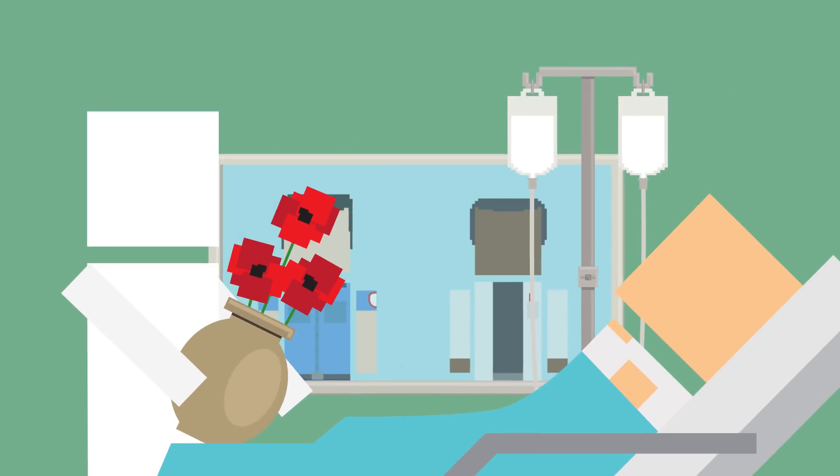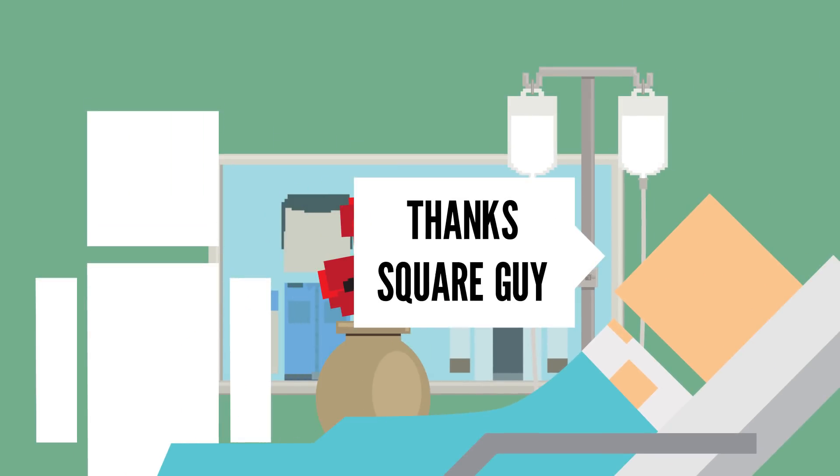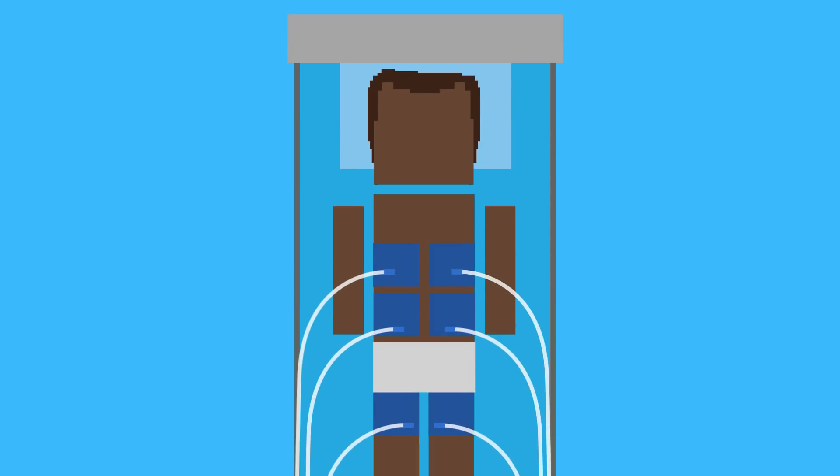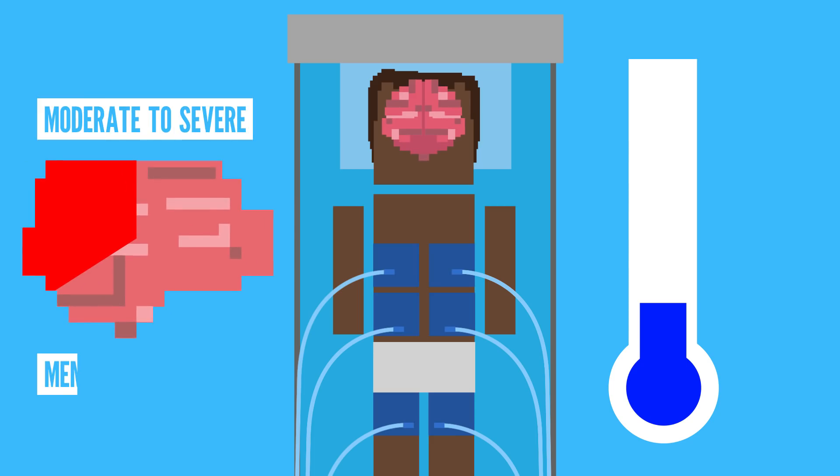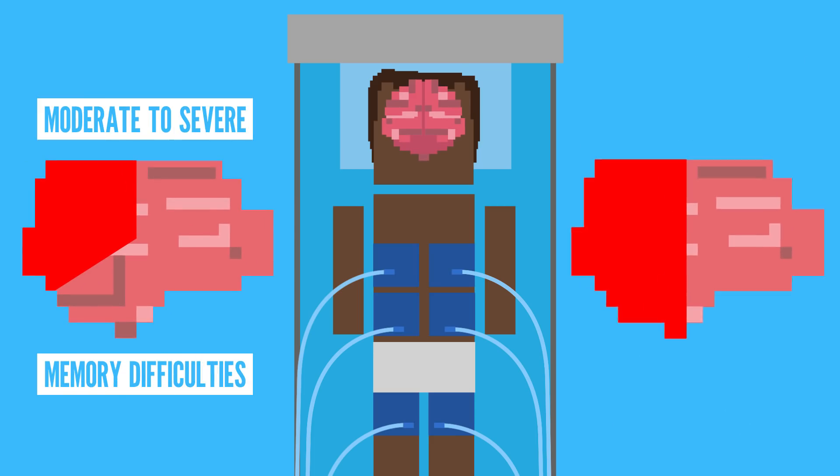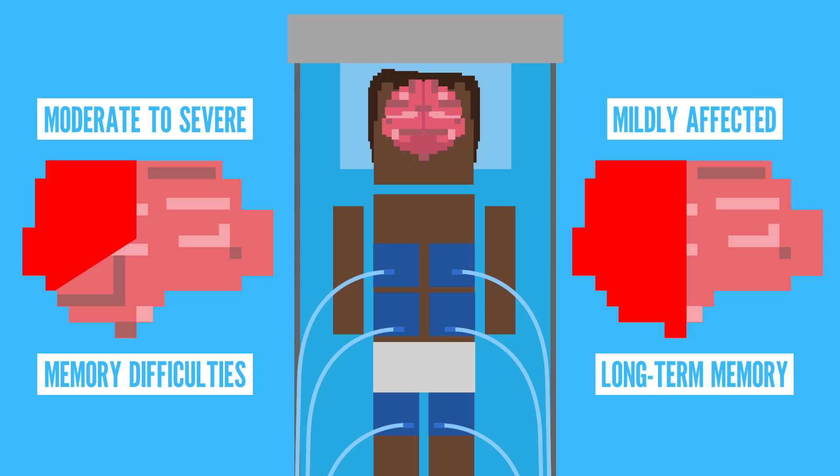That is why many survivors of cardiac arrest suffer from memory loss even years after the event. In a 2009 study of cardiac arrest survivors treated with hypothermia to protect brain function, one-third had moderate to severe memory difficulties and nearly half had mildly affected long-term memory measured by the Rivermede behavioral memory test.